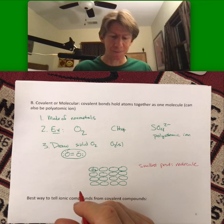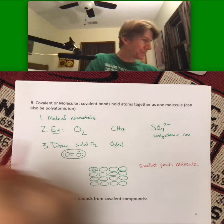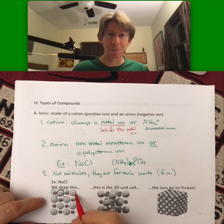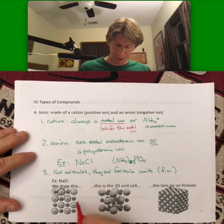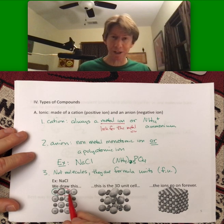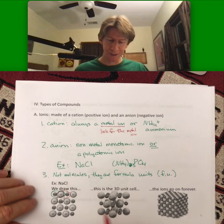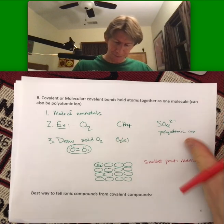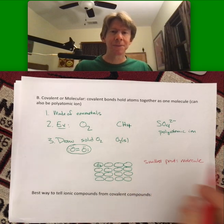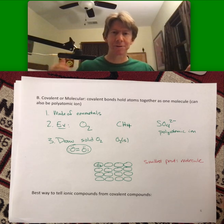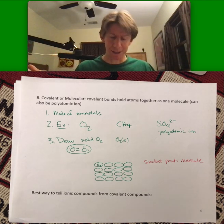Whereas the smallest part of the ionic compound, the particles, if you will, are ions. There's two different kinds of ions here in solid sodium chloride. There's only one part here. And so, that's a huge difference for ionic compounds versus covalent compounds.